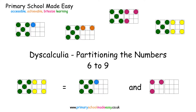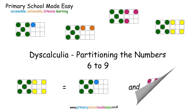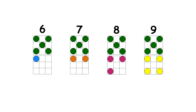Partitioning the numbers 6 to 9. We are going to look at partitioning the numbers 6 to 9. This means looking at how they can be broken down into smaller numbers, but we're only going to look at how many ways we can break them into two numbers.